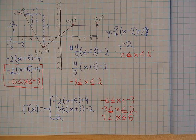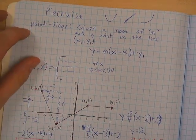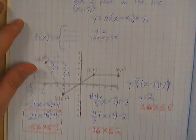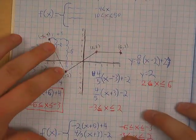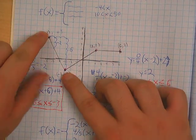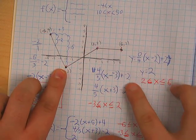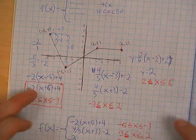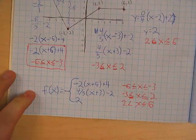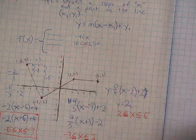And that's how you make a piecewise function from a graph. To recap: you'll most likely want to write your equations in point-slope form, find the equation for each piece of your graph, find where that equation controls your graph written as an inequality, and then list them all together in one function. Thanks for watching.